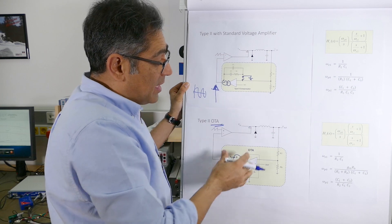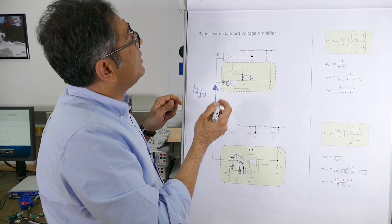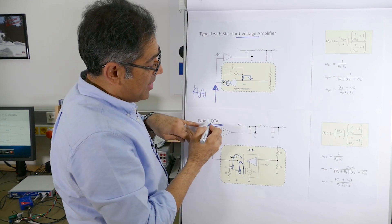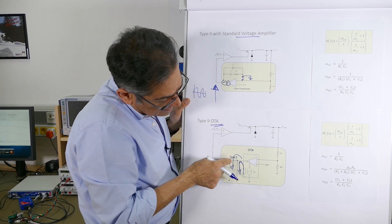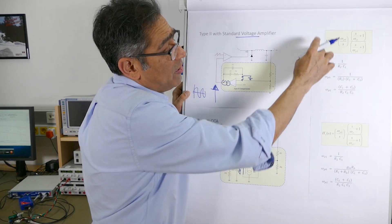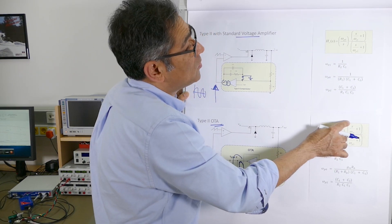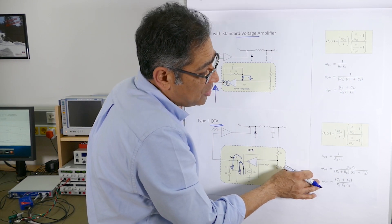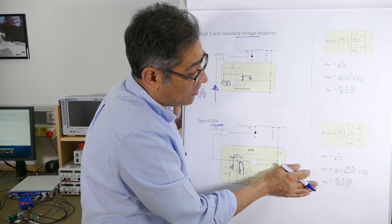Now the same thing applies to the transconductance amplifier. We can see that the only difference between a type 2 standard voltage amplifier and a transconductance amplifier is the fact that you are now connecting these exact same components to ground. The transfer function stays exactly the same — you've got one pole at origin, one zero, and then another pole — and then you've got three equations which relate the poles and zeros that you place to the components.